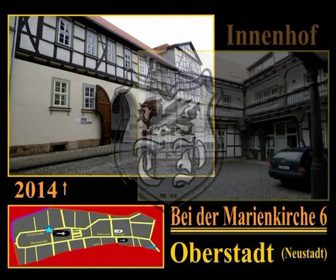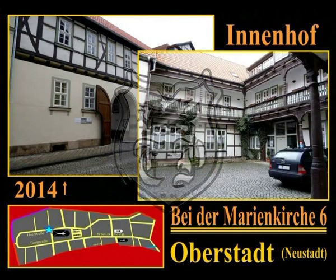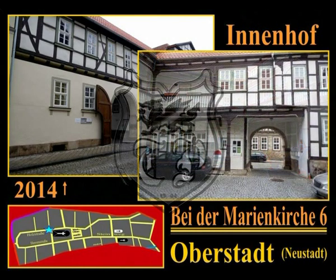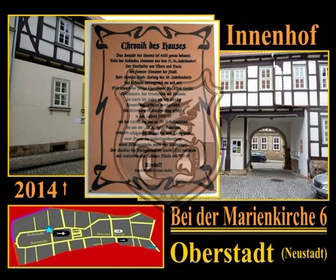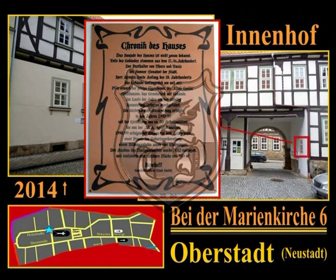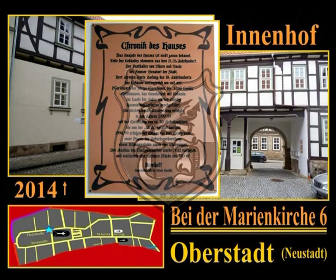Das Grundstück bei der Marienkirche 6 ist ebenfalls sehr interessant; die Zufahrt erfolgt über ein Tor in der Holzstraße gegenüber dem Turn- und Taxes Posthaus. Sehr schön kann man die für Mühlhausen typische Innenhofgestaltung hier sehen. Das genaue Baujahr des Hauses ist nicht bekannt; Teile des Gebäudeensembles stammen aus dem 15. bzw. 16. Jahrhundert. Belegt ist ein umfangreicher Um- und Ausbau durch die Posthalter von Turn- und Taxes im 18. Jahrhundert. Die nächste Grundsanierung erfolgte in den 1990er Jahren; 2012 erfolgte der Ausbau des Dachgeschosses.